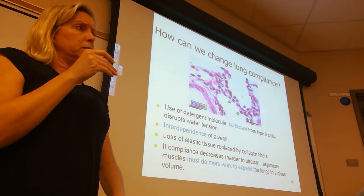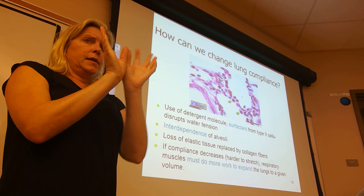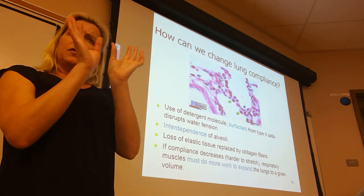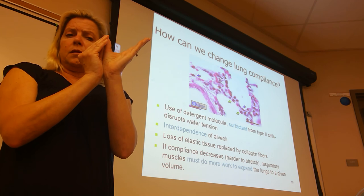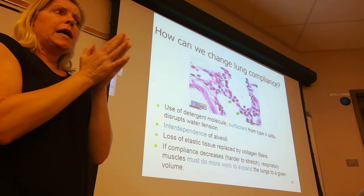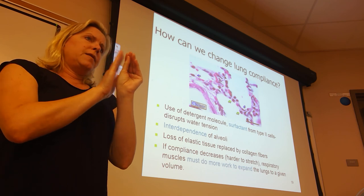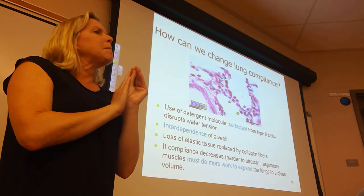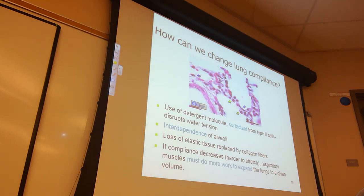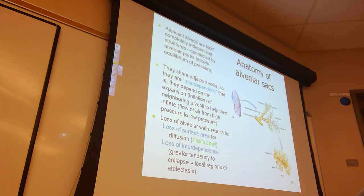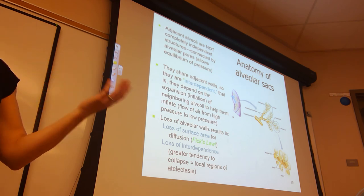Air flows from high pressure to low. If an alveolus has higher pressure than an adjacent one and they share a pore between them, air flows from the high-pressure alveolus into the low-pressure one and helps it inflate — this is called interdependency. If alveoli lose their interdependency, smaller alveoli have a greater tendency to collapse; they need more help to be compliant and open up. After your 10-minute break, I will show you the interdependency picture and tell you about surfactant and how it helps alveoli inflate their neighbors.